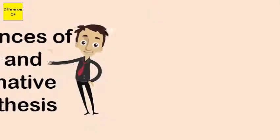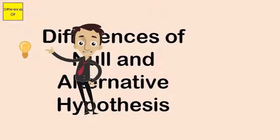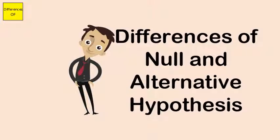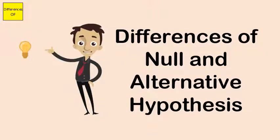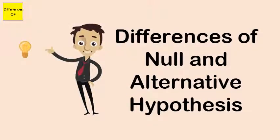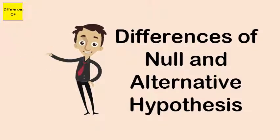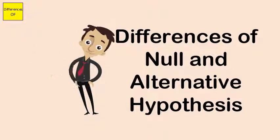Difference between null and alternative hypothesis. Null hypothesis is a statistical hypothesis which is the original or default hypothesis. Any hypothesis other than the null is called an alternative hypothesis. Null hypothesis is denoted by H0. Alternative hypothesis is denoted by H1.